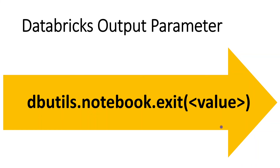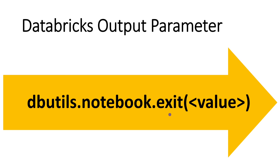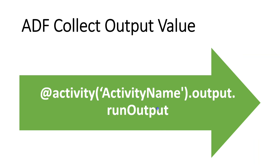There are two parts to this. In Databricks, we need to define the output parameter using dbutils.notebook.exit — within the bracket, we give the value we need to pass. On the Azure Data Factory side, we have to collect the value from Databricks. For that, we use the expression at-rate activity, then within that we give the activity name. We would have created a Databricks activity and given it a name, which should be used here. Then dot output dot run output — that is the expression.